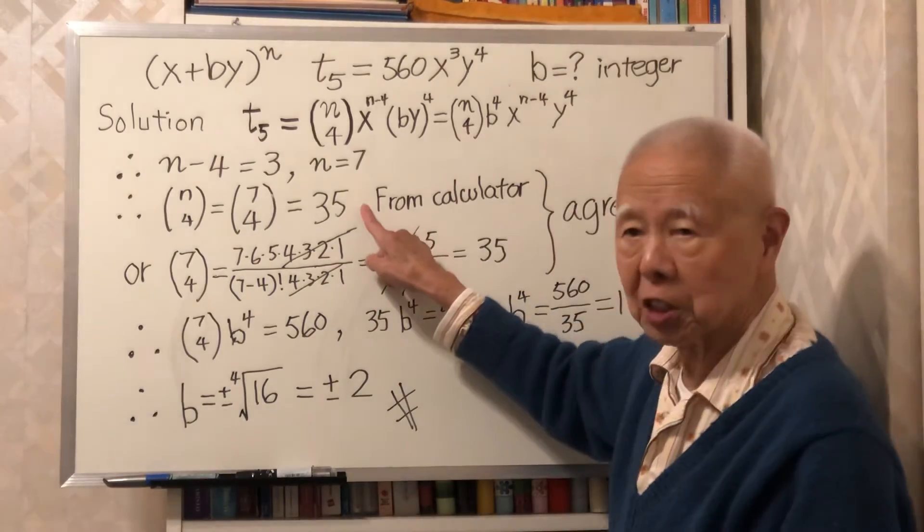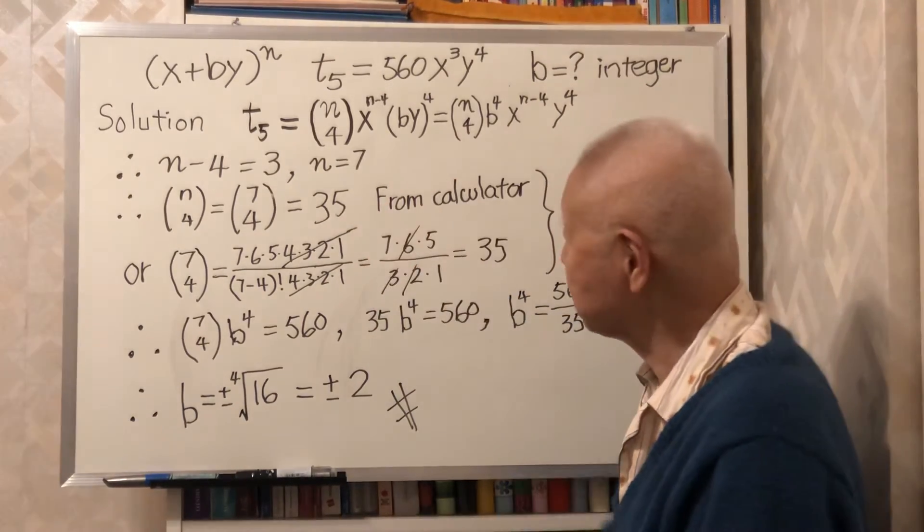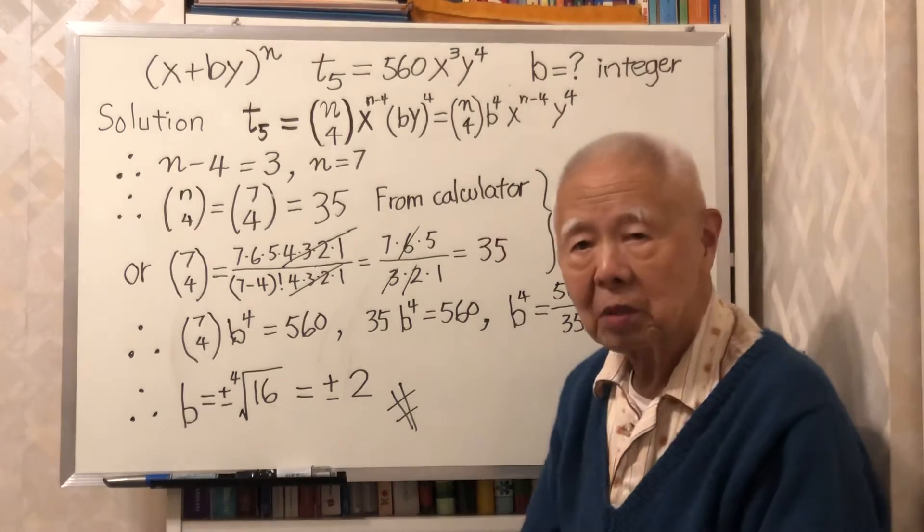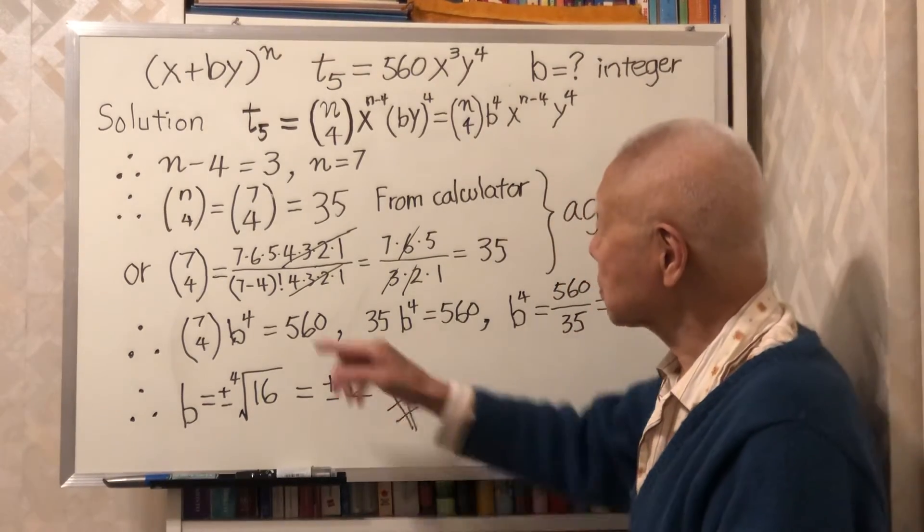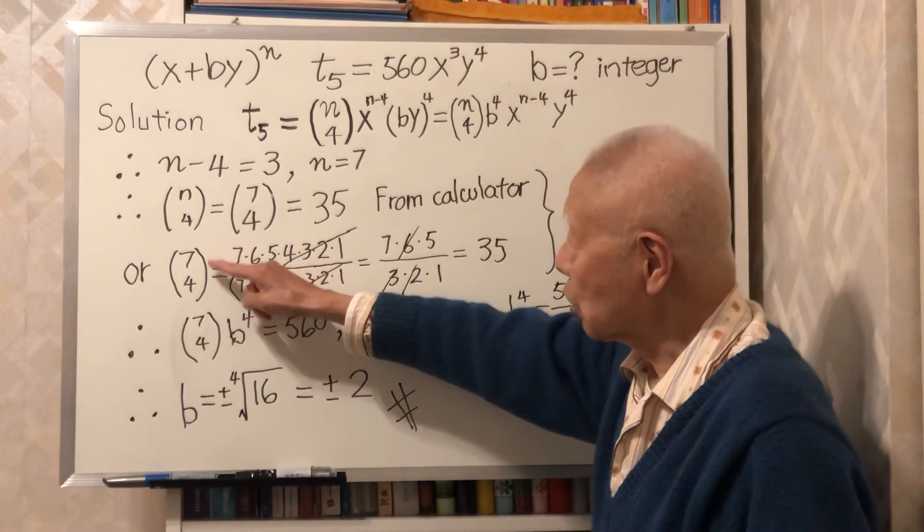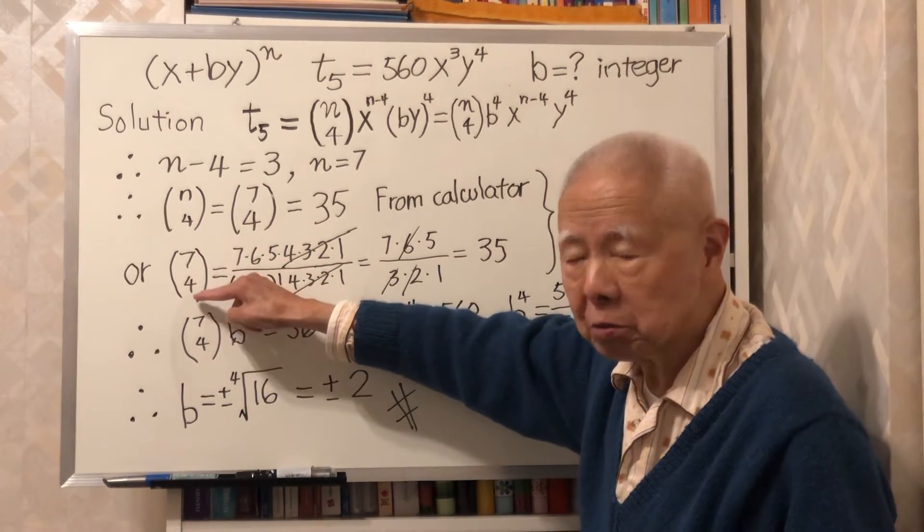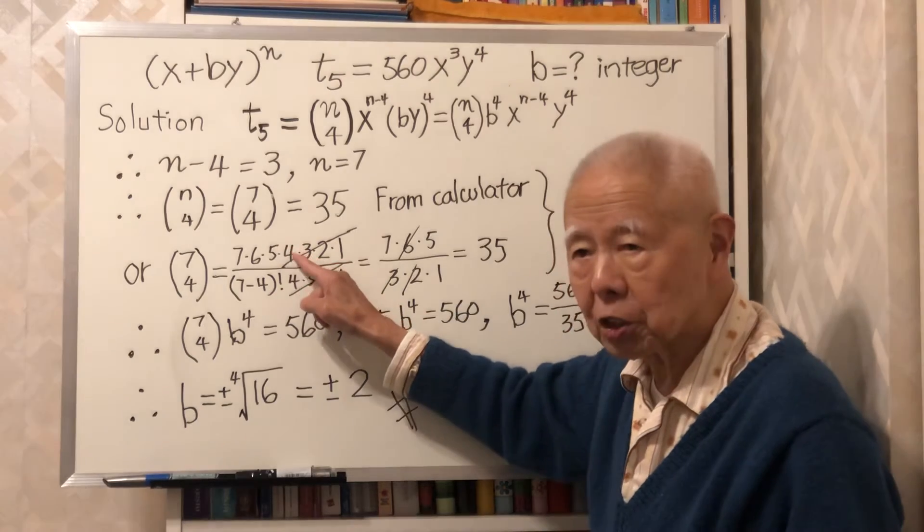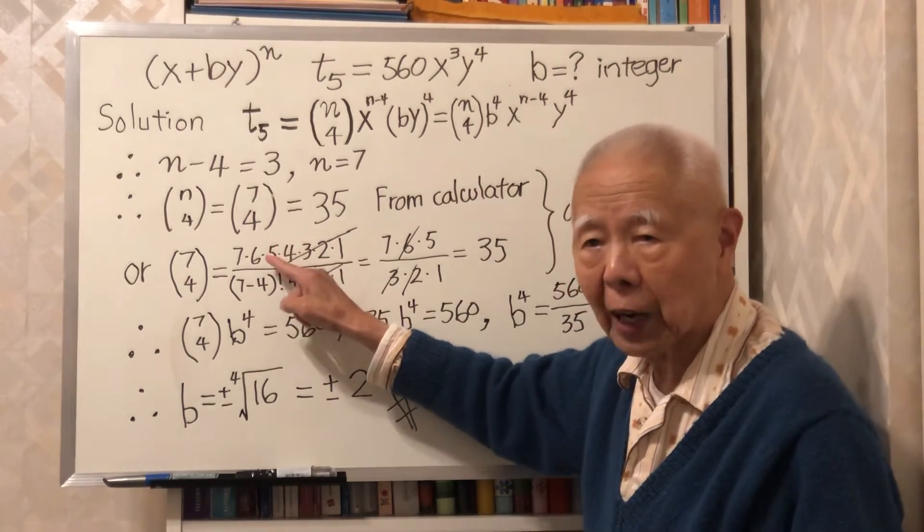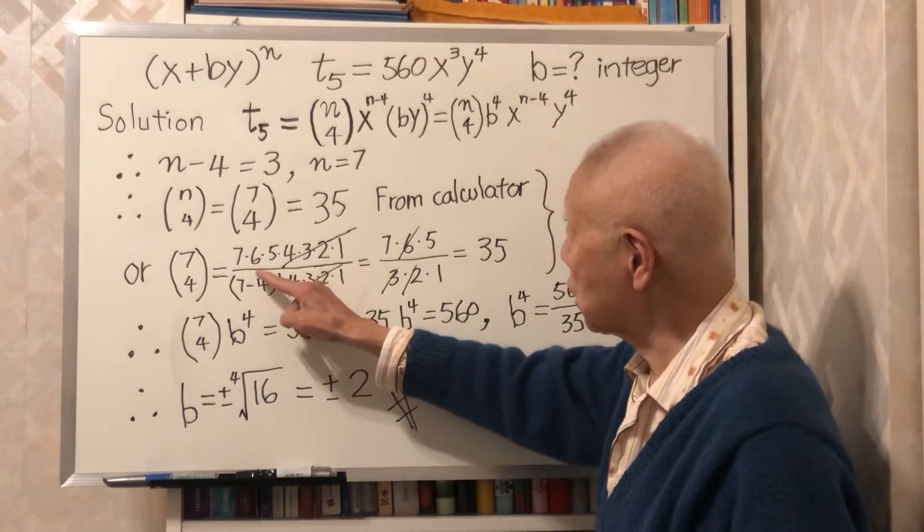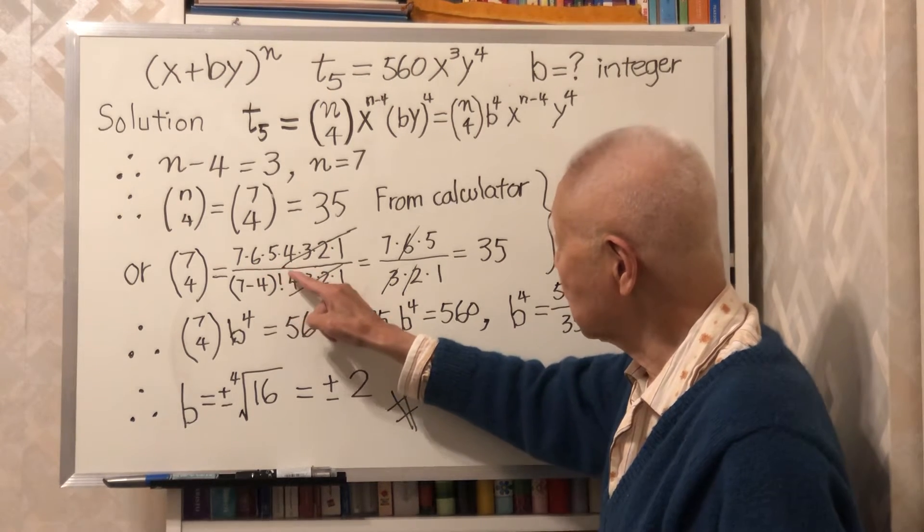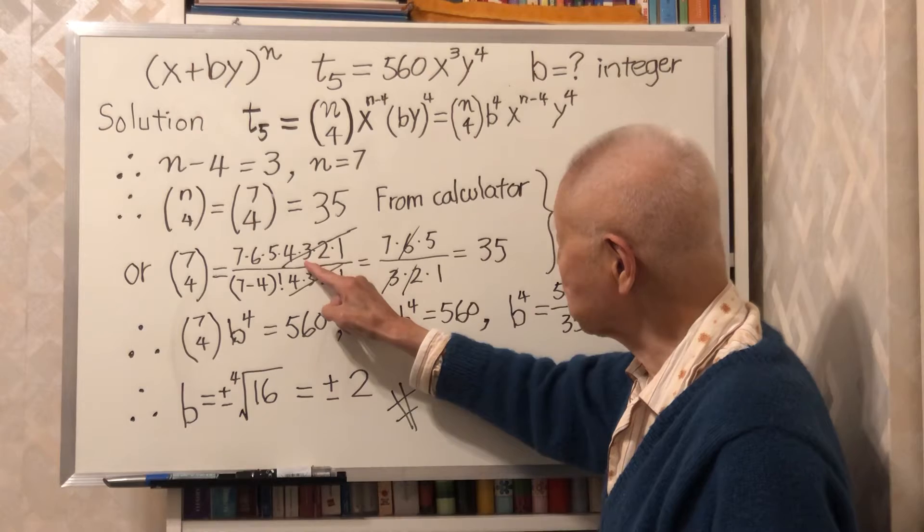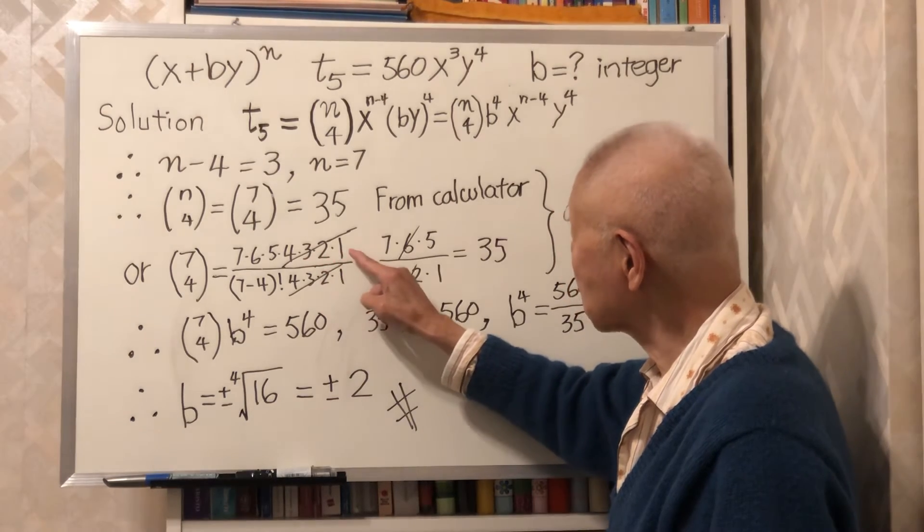Or if you do not use calculator, the formula for combination is the numerator is 7 factorial, which is 7 times 6 times 5 times 4 times 3 times 2 times 1.